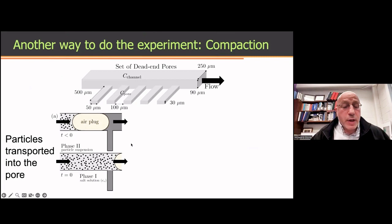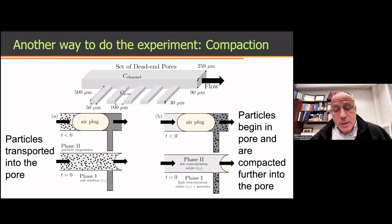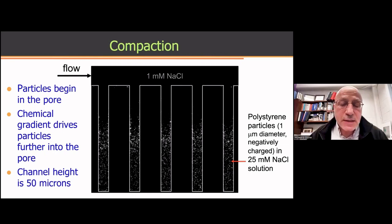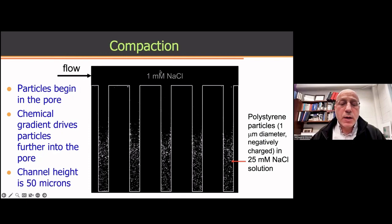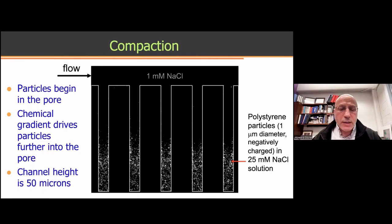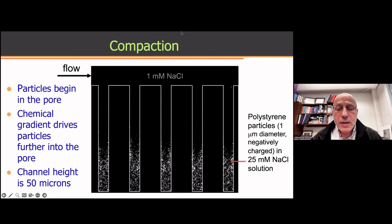There's nothing special about this arrangement. We've also done the experiment another way. Here we've now loaded the particles into the pore space. The pore space has a high salt concentration, in this case sodium chloride at 25 millimolar. The main channel now is fresh fluid with low salt. A consequence of this is that the particles in the pore are compressed or compacted. Of course, what this says is that if you made the salt concentration outside the pore higher, you would tend to remove the particles from the pore. So this gives you a way to access small spaces, even if the flow itself can't get in.